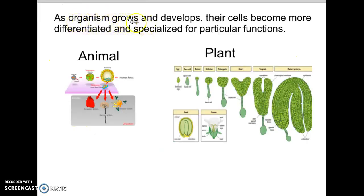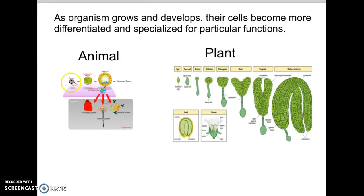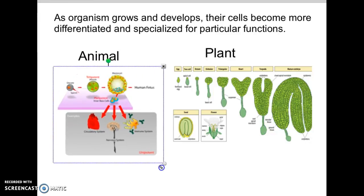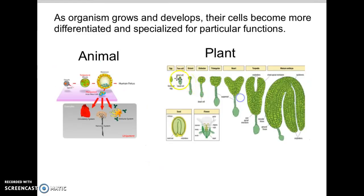As organisms grow and develop, they differentiate and specialize into their particular roles and functions. This is an example of how an animal cell would differentiate in embryonic stages, and this is an example of a plant going from a seed to more cells, then differentiating into the special types of plant cells — leaf cells, flower cells, stem cells, and root cells.